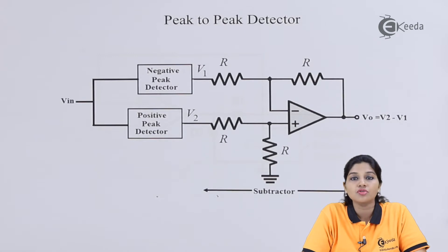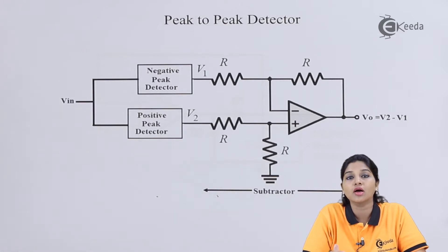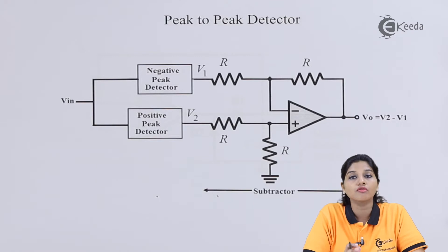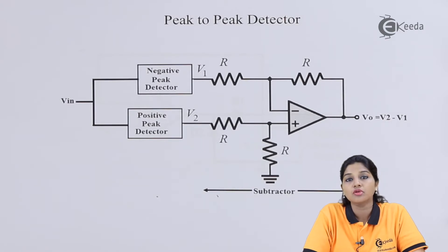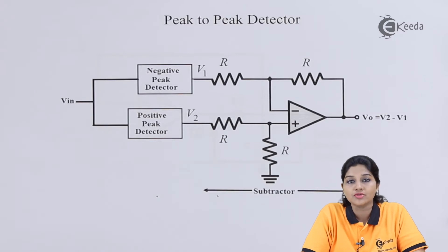During the first positive half cycle of the input signal, diode D1 is forward biased and it will charge the capacitor to the maximum peak value of the input signal. During the negative half cycle, diode D1 becomes reverse biased because after reaching the peak value, the input signal starts decreasing towards the negative half cycle. The circuit operates in two modes: track mode and hold mode. In track mode, the diode charges the capacitor to the maximum peak value, whereas in hold mode, diode D1 is reverse biased and the capacitor holds the charge until the next positive half cycle arrives, at which point the capacitor charges to a new peak value.